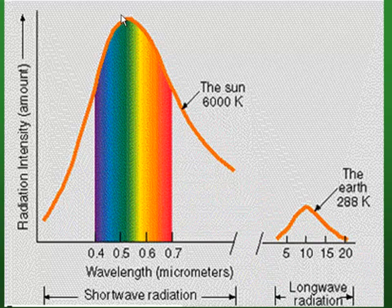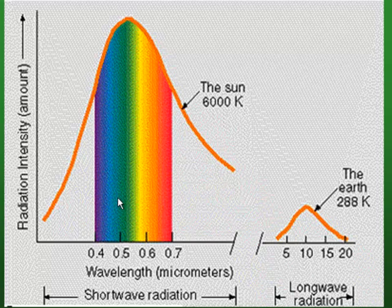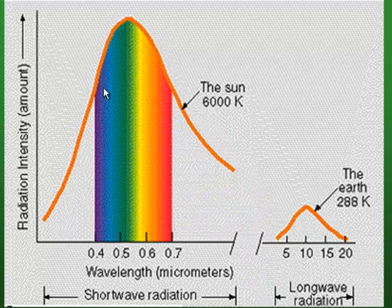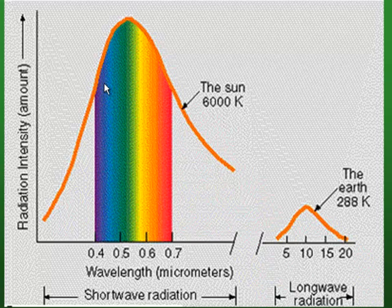So the hotter the object, the more energy emitted, and the hotter the object, the shorter the wavelength where the energy is peaking. It turns out that for the sun, its peak emittance is in the visible spectral region — from about 0.4 micrometers to about 0.7 micrometers — the range of wavelengths that we can see, called the visible spectrum.